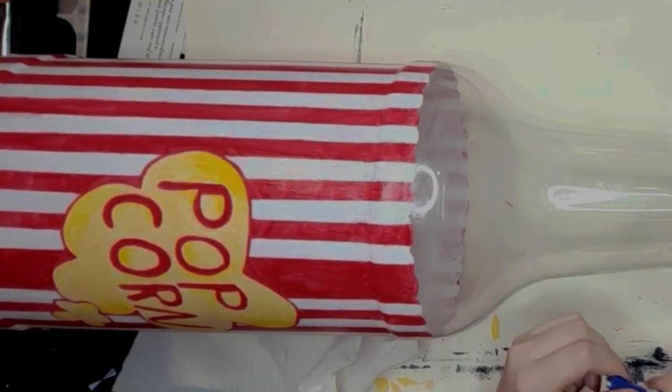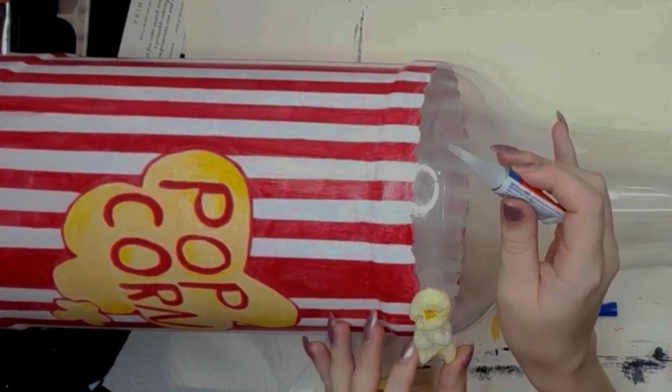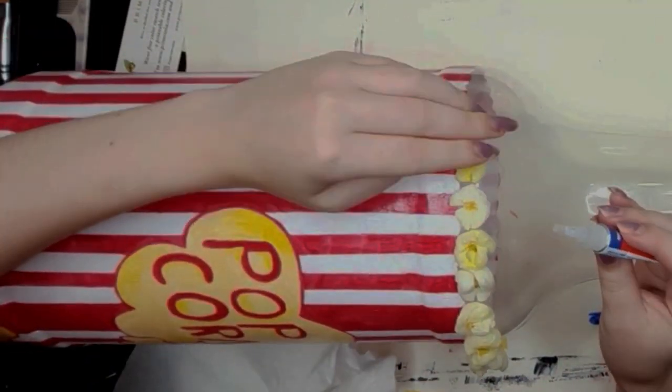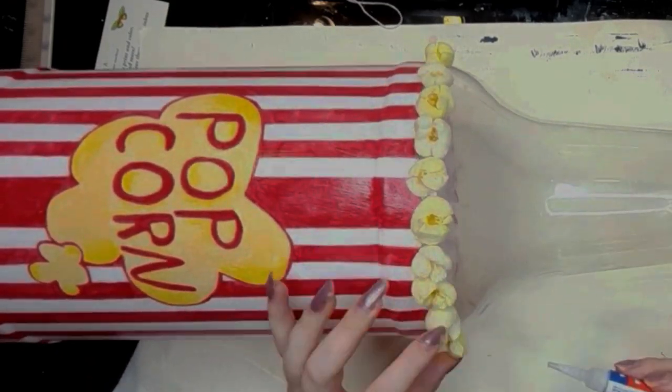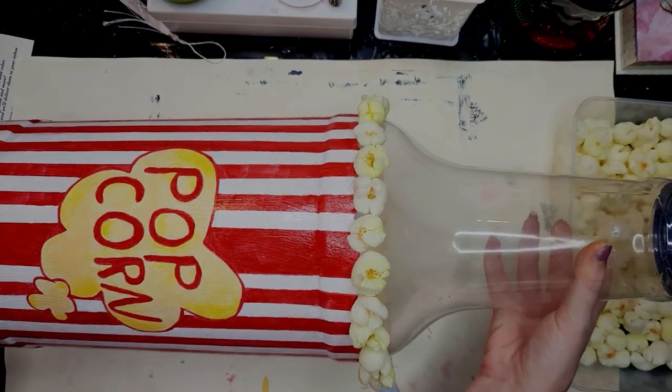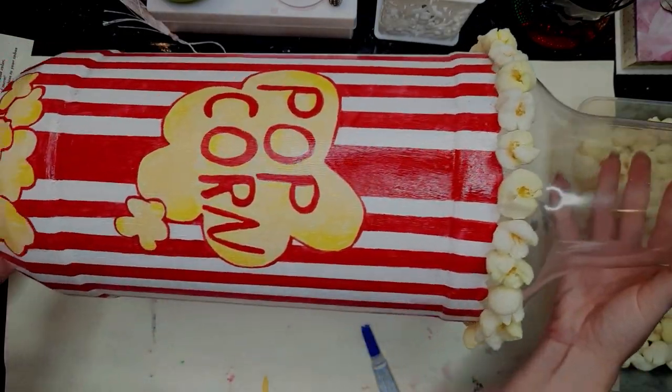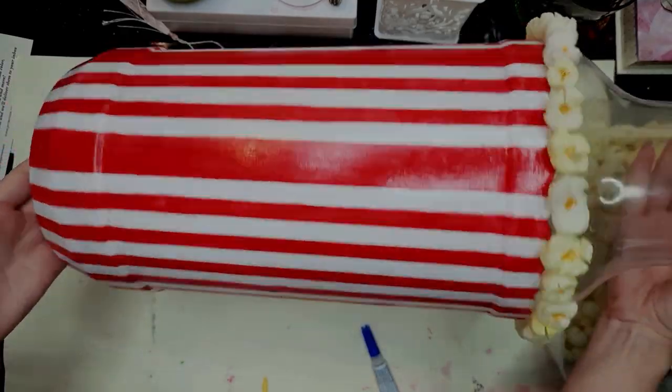To give our bottle a little extra detail, I'm taking our detailed popcorn and super gluing it around the entire bottle on those little bumps to make it look like it's overflowing. Here we are, the bottle is finished. I think having that extra detail with the detailed popcorn just brought the whole thing together, and now we can start working on the next step.